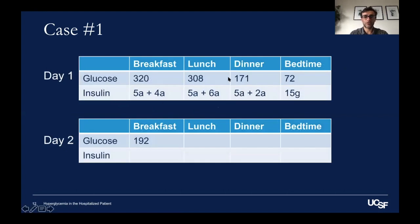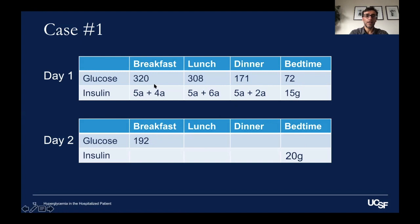On day one, we look at his glucose values and the insulin he received. On day two, his AM glucose is 192, which is outside the desired range. This reflects the 15 units of glargine he received the night before, so on hospital day two we want to give him a bigger dose of glargine at bedtime. Between breakfast and lunch, the patient's glucose stayed relatively flat. The nine units of insulin he received with breakfast — five units prandial and four units for sliding scale — is likely enough, so on day two we'll give him nine units of Aspart with breakfast.